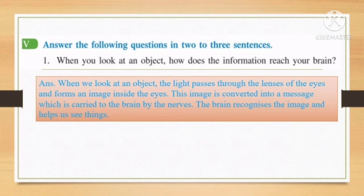So dear class, anything that we see — first, the image of that object is passed through the lenses present in our eyes and then it forms the image inside the eyes. Then that image is converted into a message which is carried to the brain with the help of nerves. And this is how we are able to recognize things.